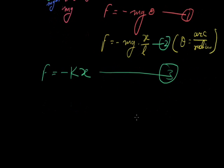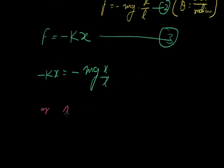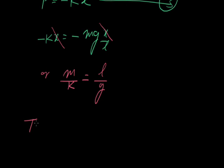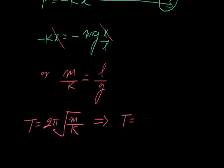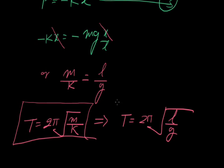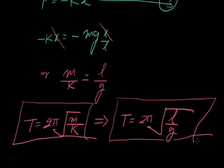On comparing the two equations, minus Kx equals minus Mgx upon L, so M/K equals L/G. We know that the time period T equals 2π√(M/K) in the case of a spring. So here the time period will be T equals 2π√(L/G). This is the time period in the case of a spring, and this will be the time period in the case of a pendulum, because here M/K equals L/G.